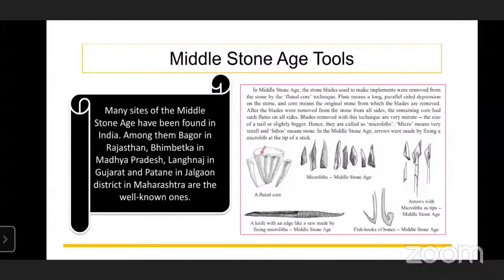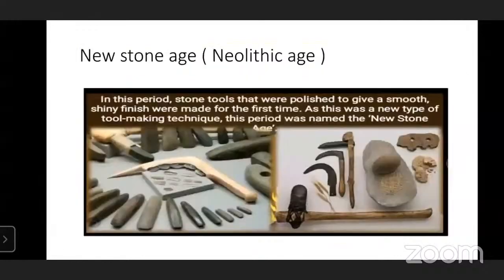In the Middle Stone Age, arrows were made by fixing these microliths at the tip of a stick. You can see in the picture arrows with microliths placed as tips. They fixed the microlith on the tip of a stick and it becomes an arrow. There is also a knife with an edge like a saw. And fish hooks made from bones were also used in this period.